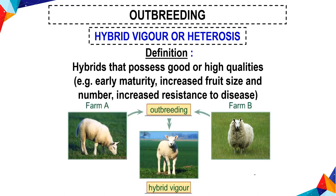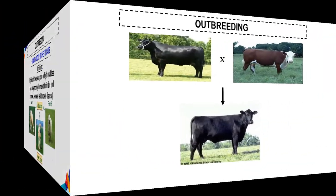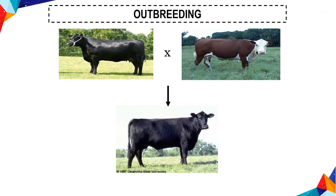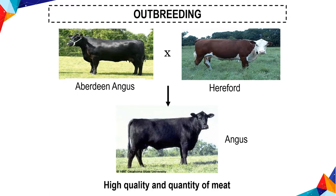This diagram shows hybrid vigor in animals produced by breeding between animals from Farm A and Farm B. Out-breeding between Angus and Hereford cattle produces Angus-Hereford hybrids, which have high quality and quantity of meat.